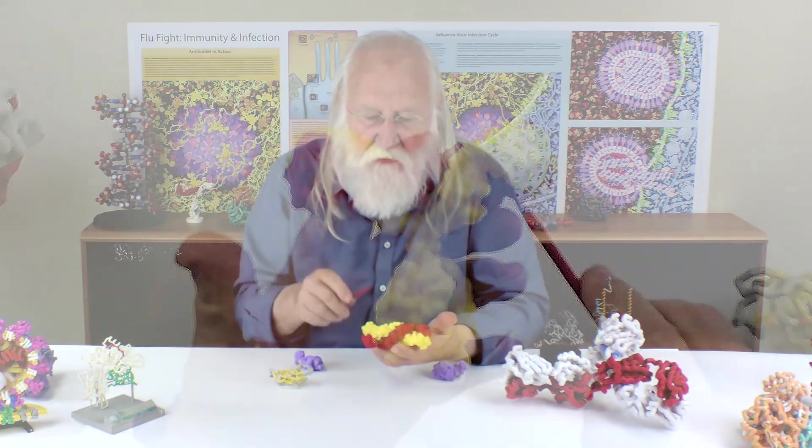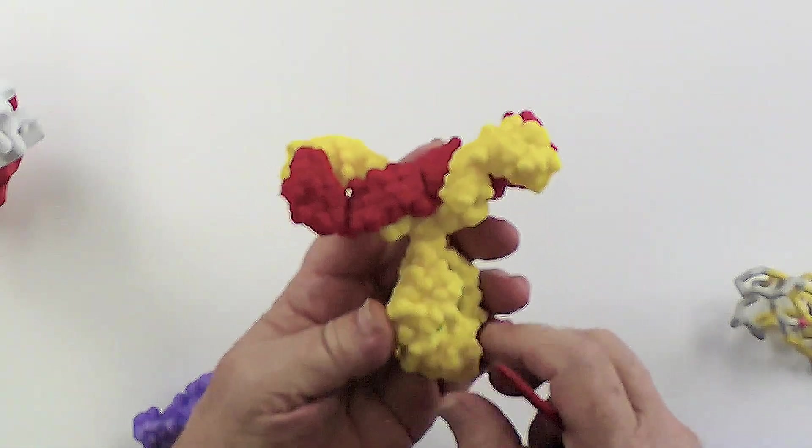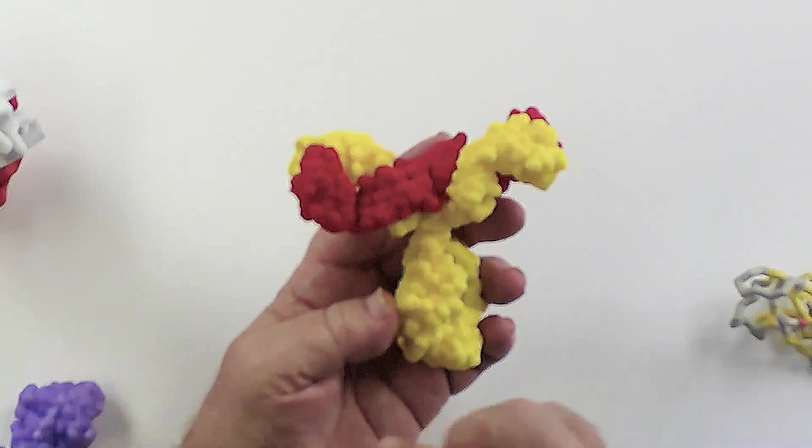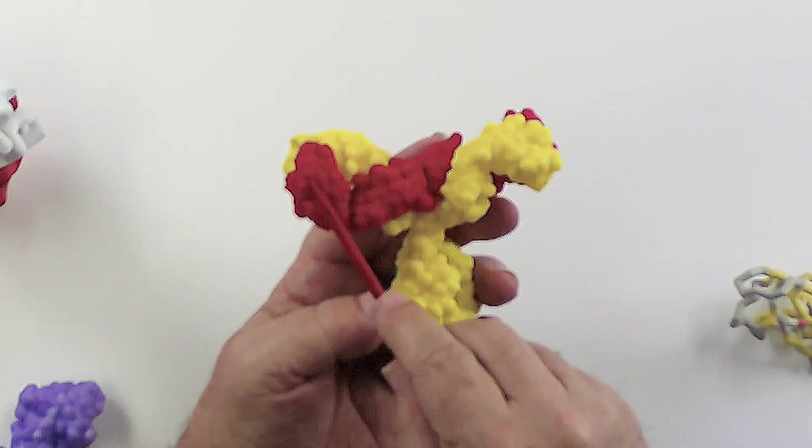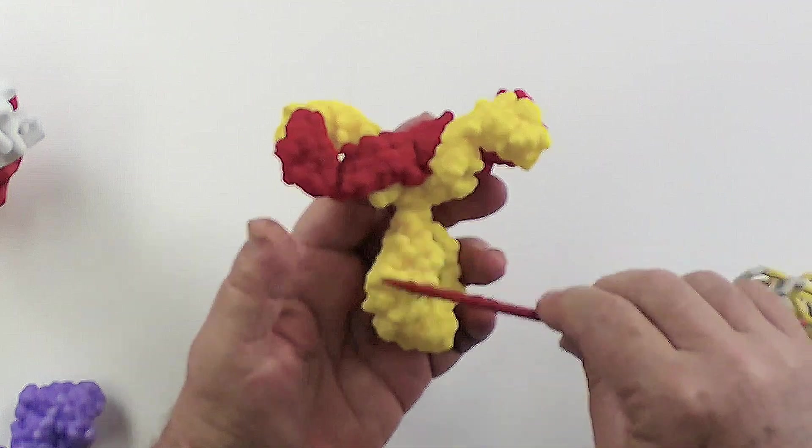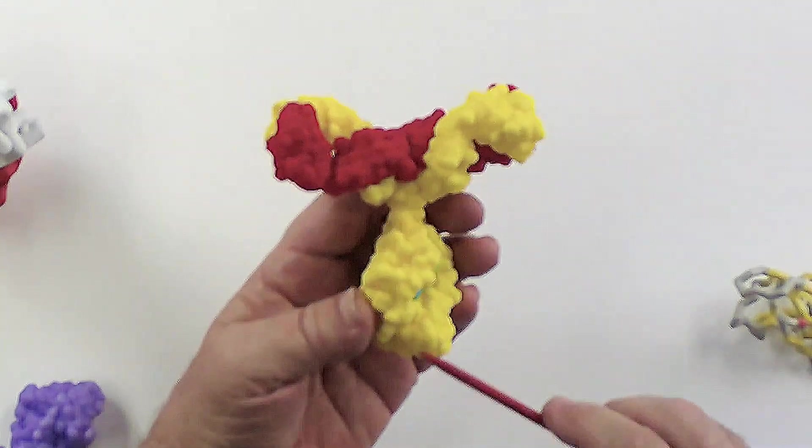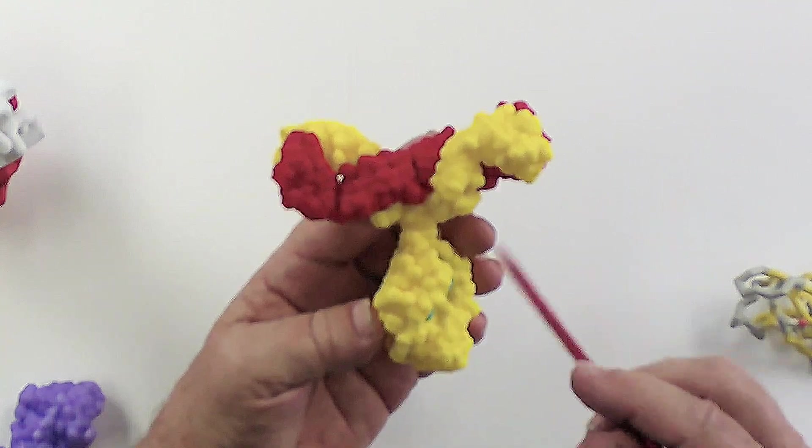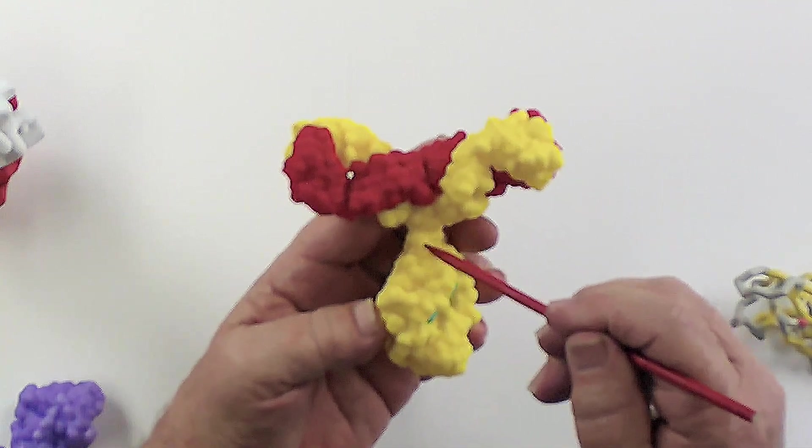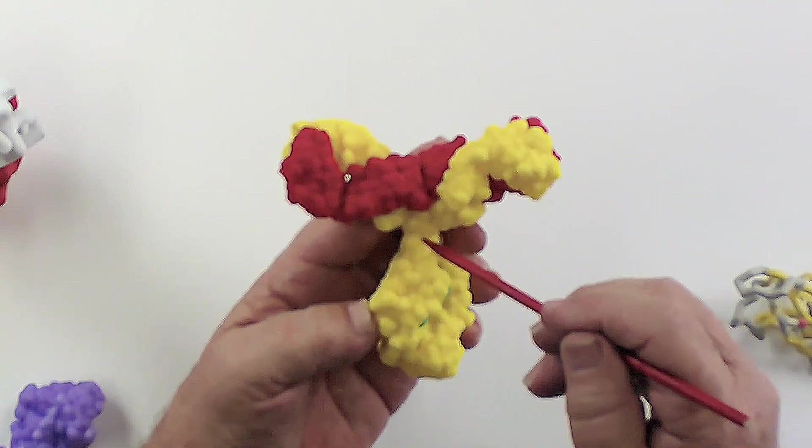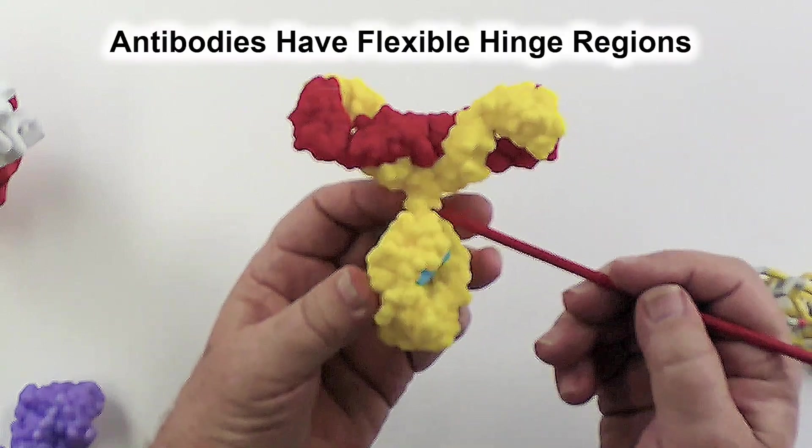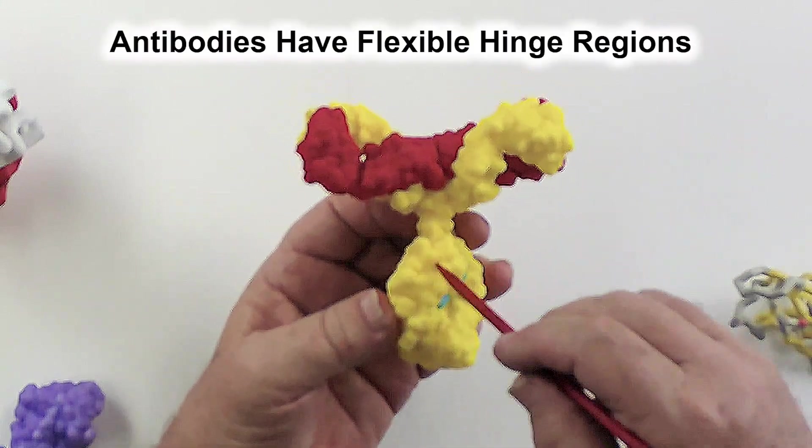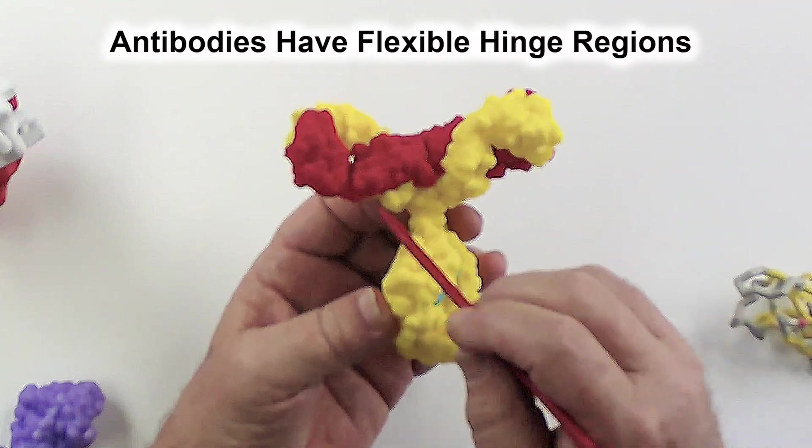You have this characteristic three-lobe structure. And you'll see this in David's illustration. So you have these two binding antigen binding domains up here, and then you have something down here called the FC region. But this region right in here I should comment on because this is a very flexible region. This is sort of the hinge region in this protein. And there's a lot of flexibility built into this protein right here.